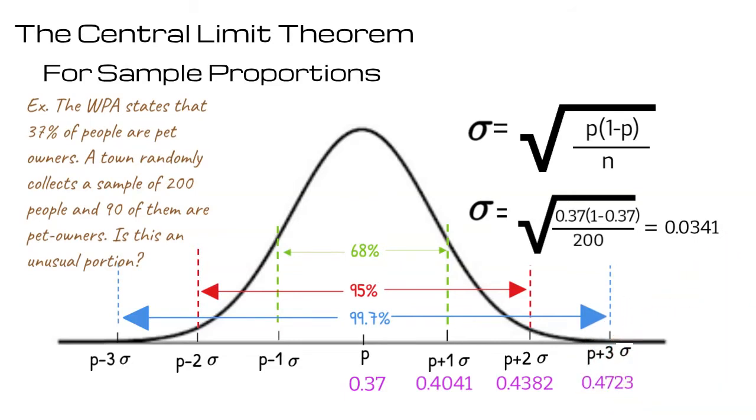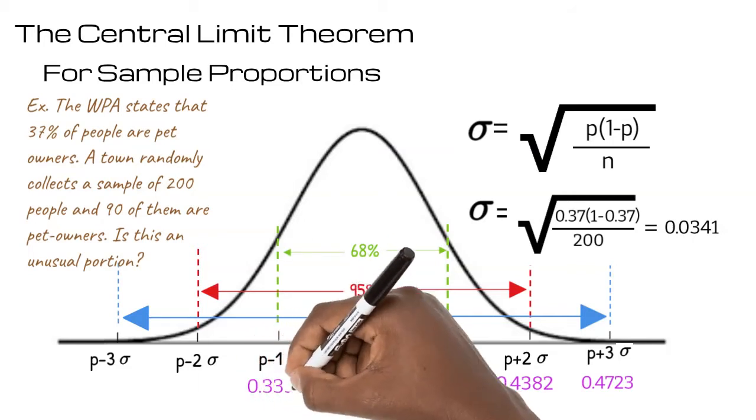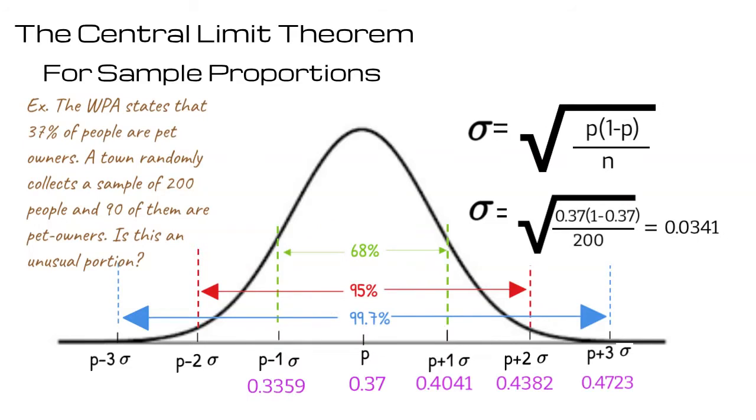We take 0.0341 from 0.37 to get 0.3359. We take the standard deviation away again.